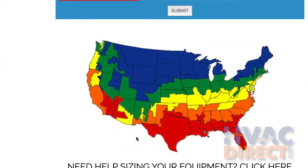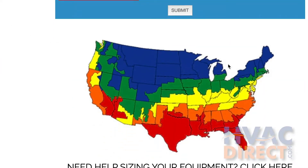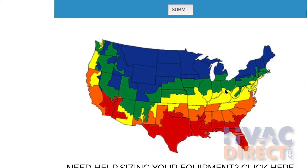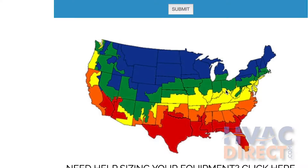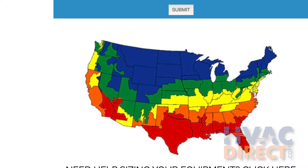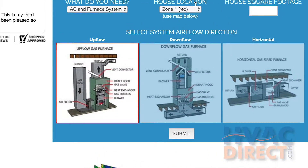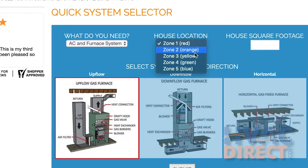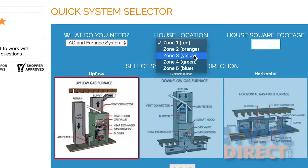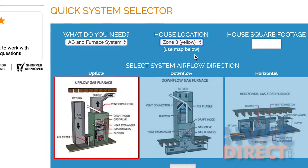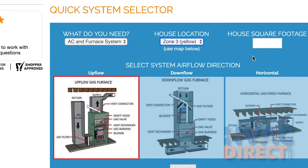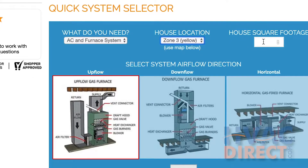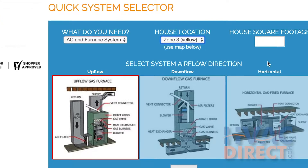Next, select where in the country you live. Refer to the map and note the corresponding color of where you live. If you live in southwest Ohio, you would live in zone 3 or the yellow zone. Pull down on the menu in the middle to the zone 3 yellow section.